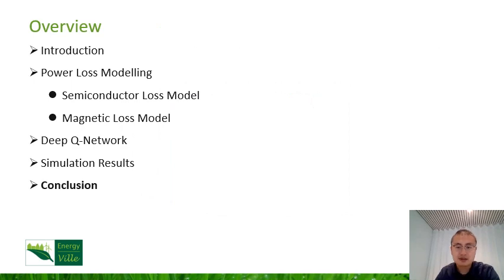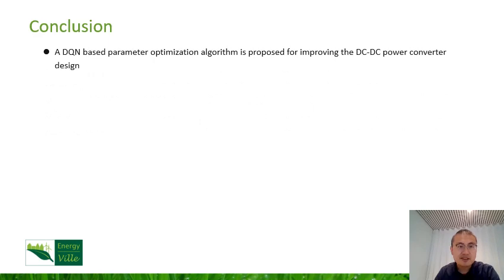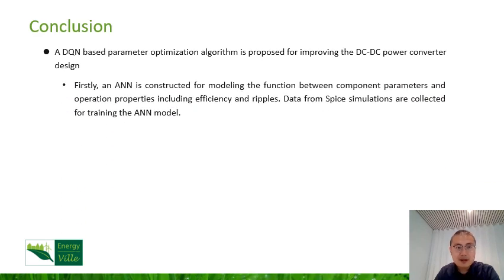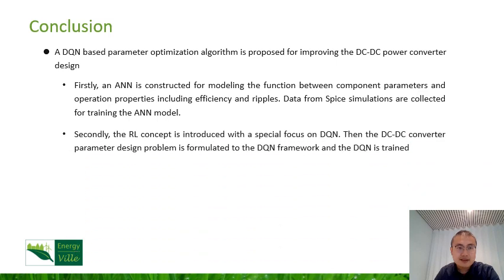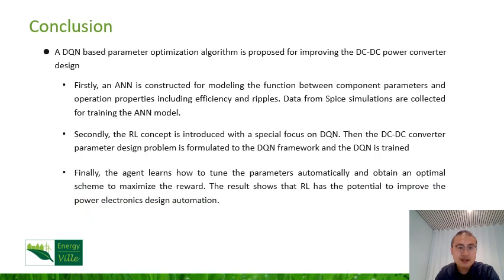The last part is the conclusion. In this paper, a DQN-based parameter optimization algorithm is proposed for improving the DC-DC power converter design. Firstly, an artificial neural network is constructed for modeling the function between component parameters and operation properties, including efficiency and ripple. Data from SPICE simulations are used for training the ANN module. Secondly, the reinforcement learning concept is introduced with a special focus on DQN. Then, the DC-DC converter parameter design problem is formulated to the DQN framework. Finally, the agent learns how to tune the parameters automatically and obtain an optimal scheme to maximize the reward. The results show that reinforcement learning has the potential to improve the power electronics design automation.